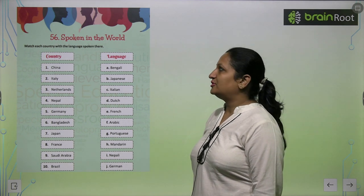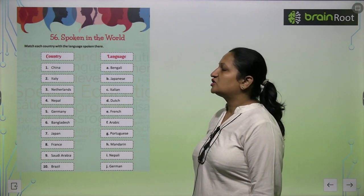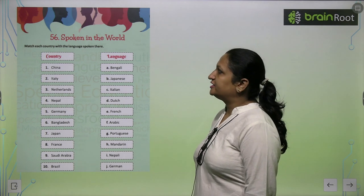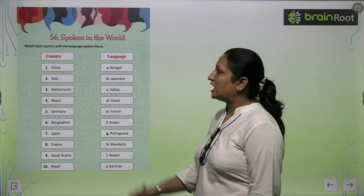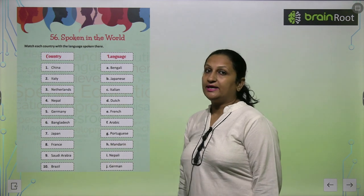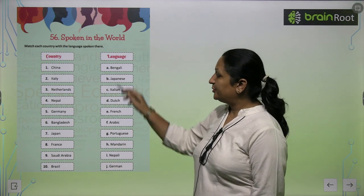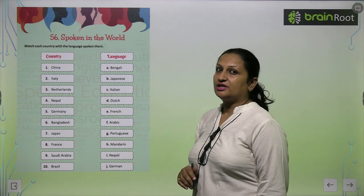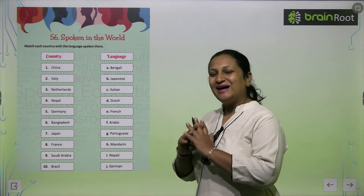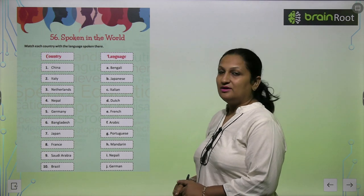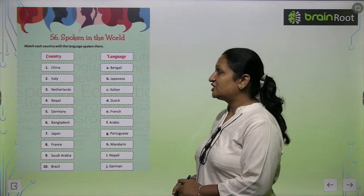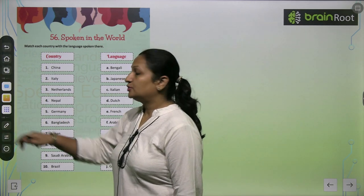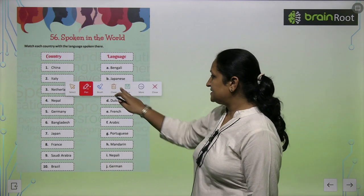Children, let's begin with chapter number 56 — 'Languages spoken in the world.' Match each country with the language spoken there. Here you are given the names of countries, and here are the languages spoken in those countries. We have to match both. See the first one — China. What language is spoken in China? You know this — it is...